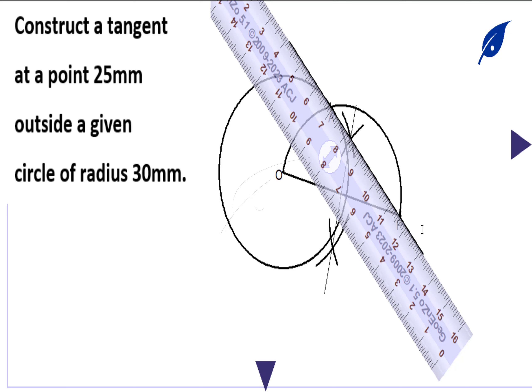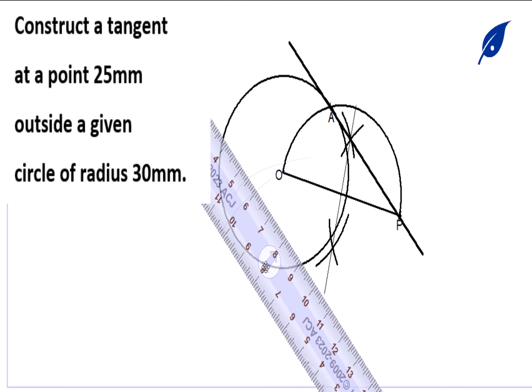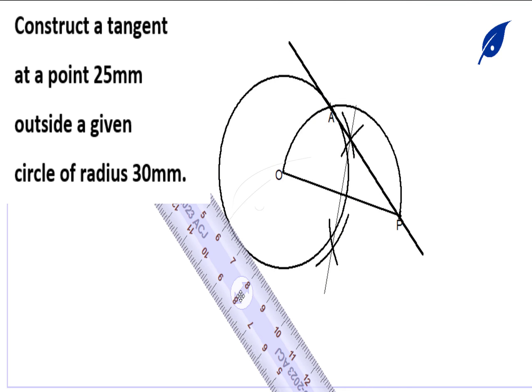I hope you've understood how to construct this external tangent from a point P which is outside the circle. Thank you for watching.